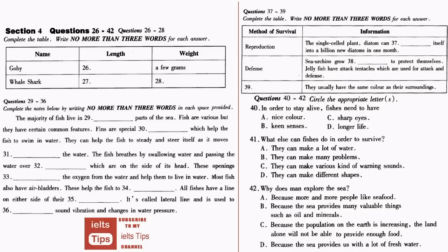Most fish also have air bladders. These help the fish to float. All fish have a line on either side of their bodies. It is called the lateral line and is used to detect sound vibrations and changes in water pressure.